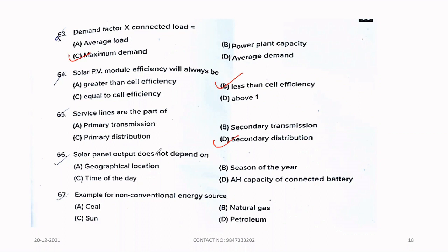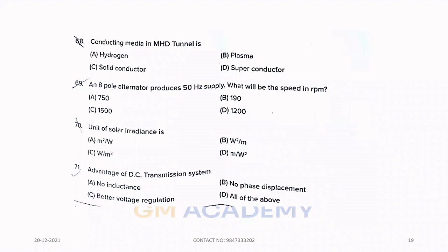Sixty-five. Service lines are the part of option D, secondary distribution. Sixty-six. Solar panel output does not depend on option D, ampere hour capacity of connected battery. Sixty-seven. Example for non-conventional energy source. Option C, sun. Sixty-eight. Conducting media in MHD channel is, option B, plasma.